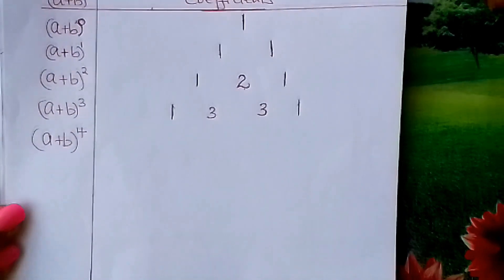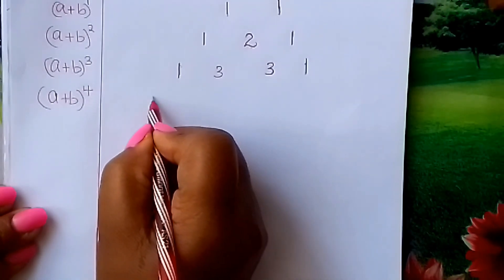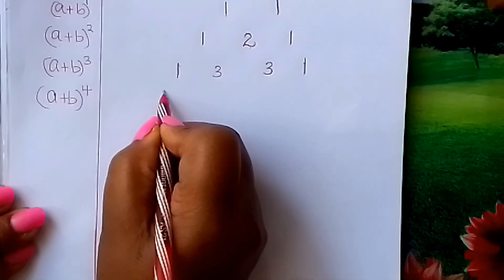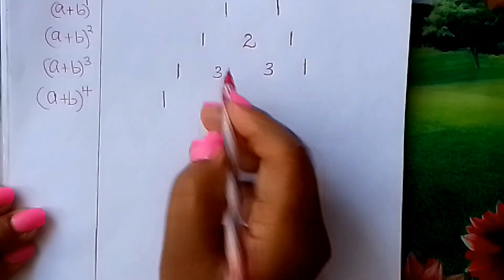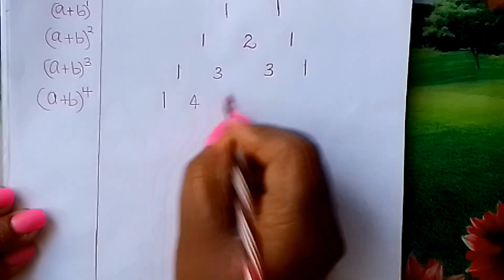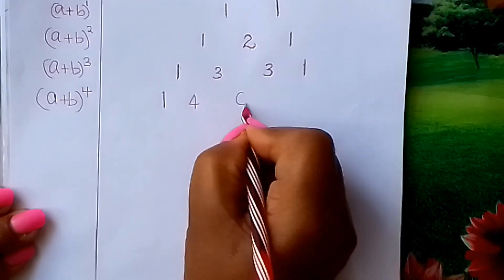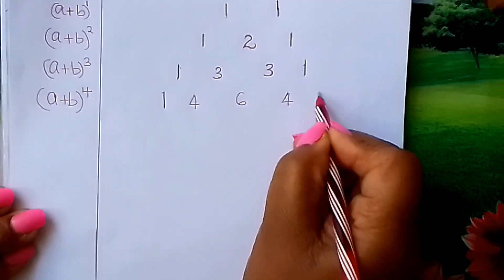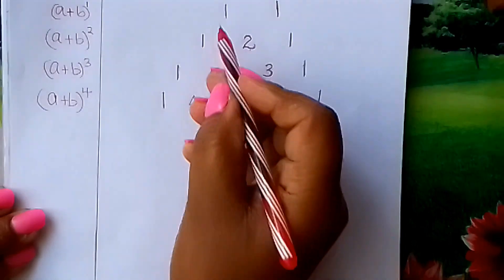We go to (a + b) raised to 4. I hope you are following. You come and fix here — your first coefficient will be 1. Then 1 plus 3 gives us 4, fix it there. 3 plus 3 gives us 6. 3 plus 1 gives us 4. And finally, 1 in a slanting manner.